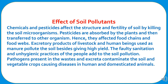Chemicals and pesticides affect the structure and fertility of soil by killing soil microorganisms. Pesticides are absorbed by plants and then transferred to other organisms, affecting food chains and food webs. Excretory products of livestock and human beings used as manure pollute the soil besides giving high yield. Faulty sanitation and unhygienic practices add to soil pollution. Pathogens present in wastes and excreta contaminate the soil and vegetable crops, causing diseases in humans and domesticated animals.